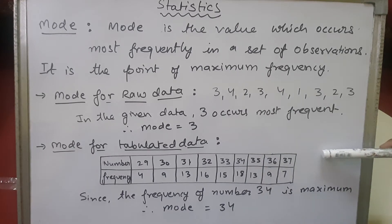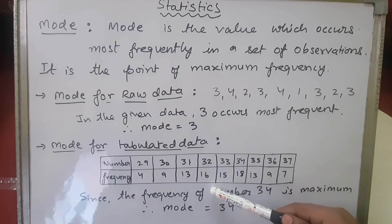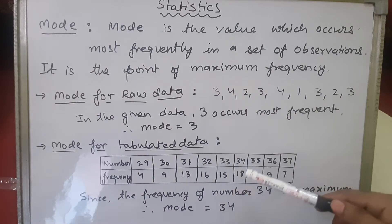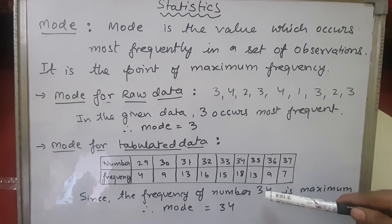Suppose the numbers are given here like 29, 30, 31, 32, and the frequency is given: the frequency of 29 is 4, 30 is 9, 31 is 13, 32 is 16, 33 is 15, 34 is 18, 35 is 13.